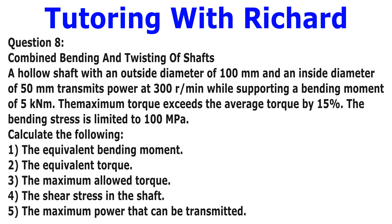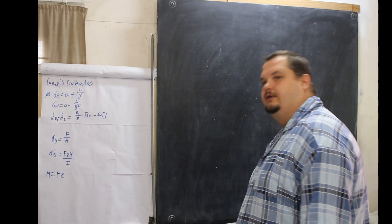the equivalent torque, 8.3 is the maximum allowed torque, 8.4 is the shear stress in the shaft, and 8.5 is the maximum power that can be transmitted.